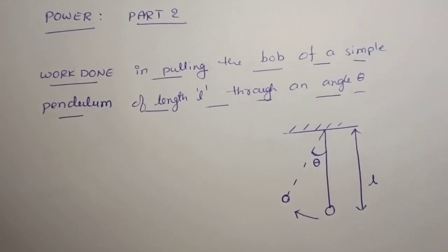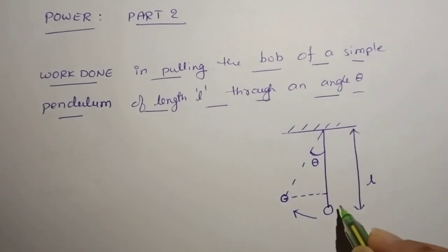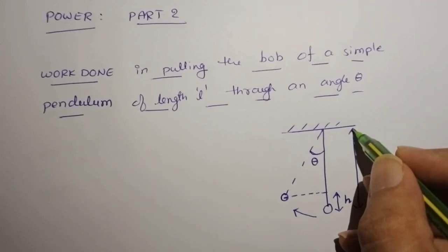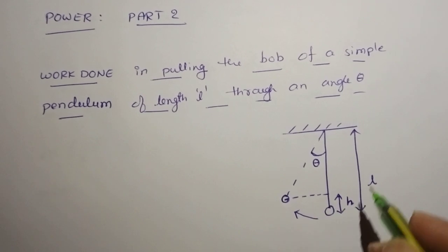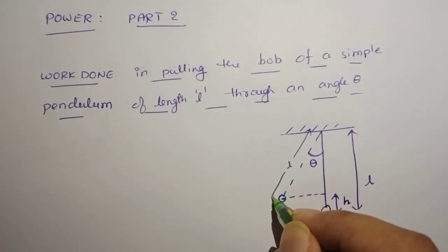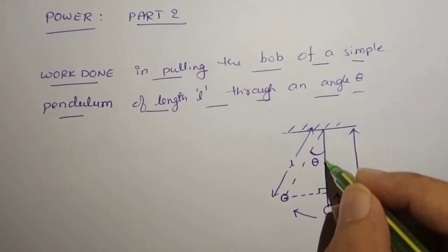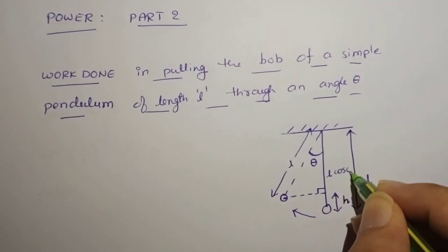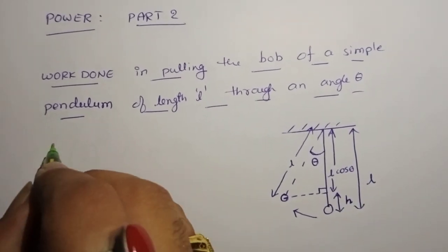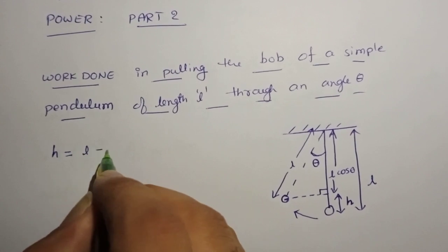How to calculate work done? We have to calculate the height through which the bob has moved. This is that particular height H. The length of the pendulum is L, so this length is also equal to L. If this angle is theta, the adjacent side is L cos theta. So H will be equal to L minus L cos theta.